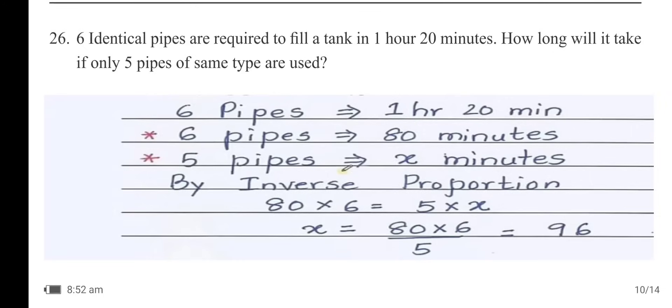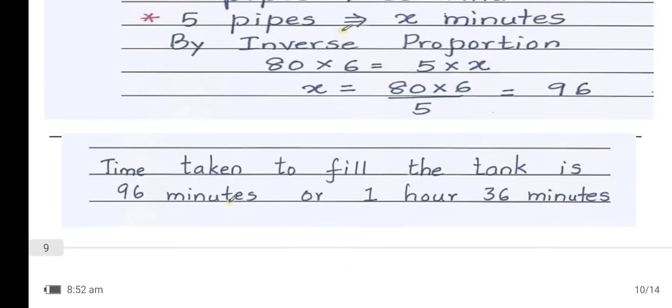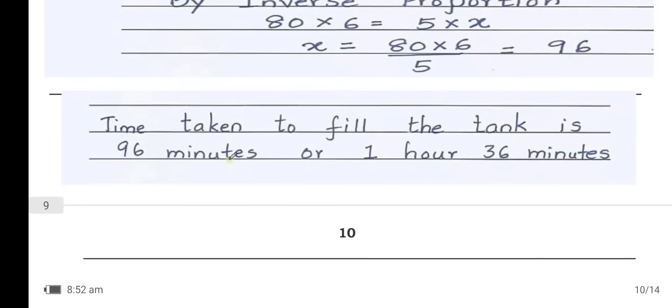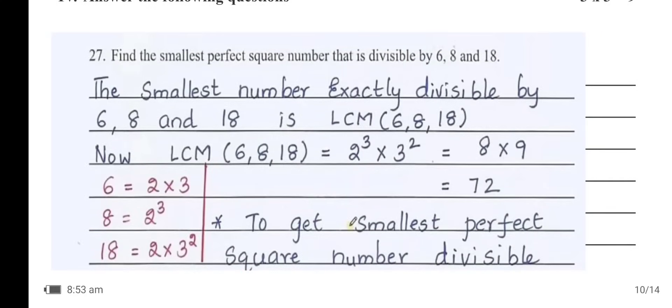6 identical pipes are required to fill a tank in 1 hour 20 minutes. How long will it take if only 5 pipes are used? 6 pipes = 80 minutes. By inverse proportion: 80 × 6 = 5 × x, so x = 480/5 = 96 minutes, which is 1 hour 36 minutes.